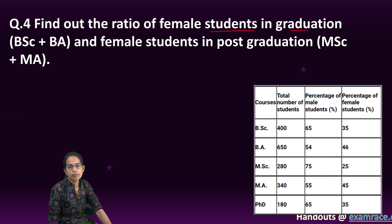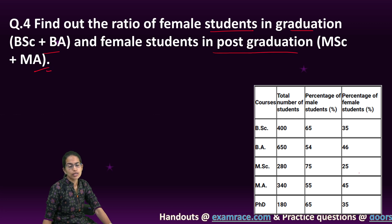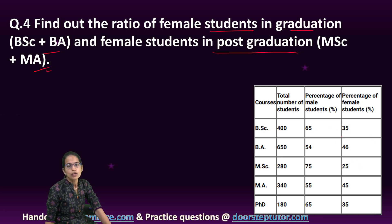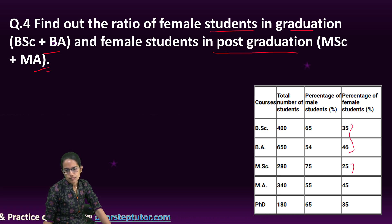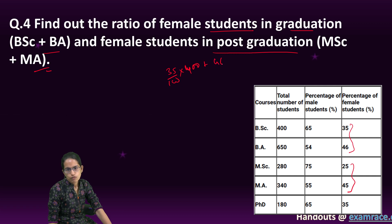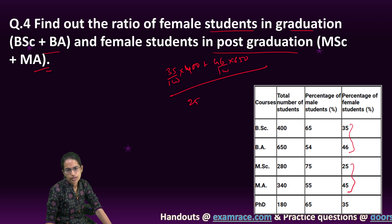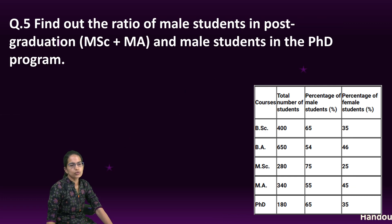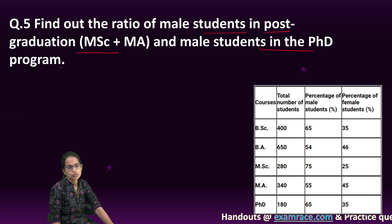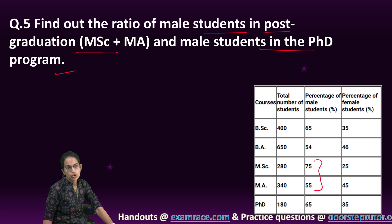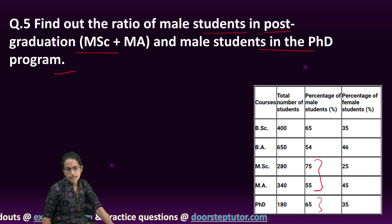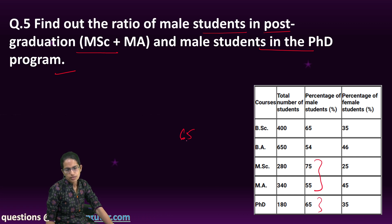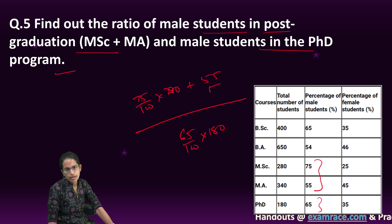Similarly, if I want to find the ratio of female students in graduation to female students in post-graduation, I cannot take the percentage — I would have to convert to absolute values. So female students in graduation divided by female students in post-graduation: (35/100 × 400 + 46/100 × 650) divided by (25/100 × 280 + 45/100 × 340). For the ratio of male students in post-graduation to male students in PhD, the numerator is 75/100 × 280 + 55/100 × 340, and the denominator is 65/100 × 180.